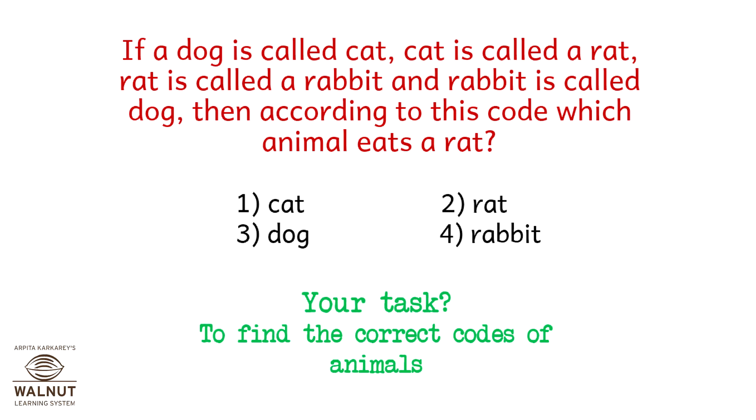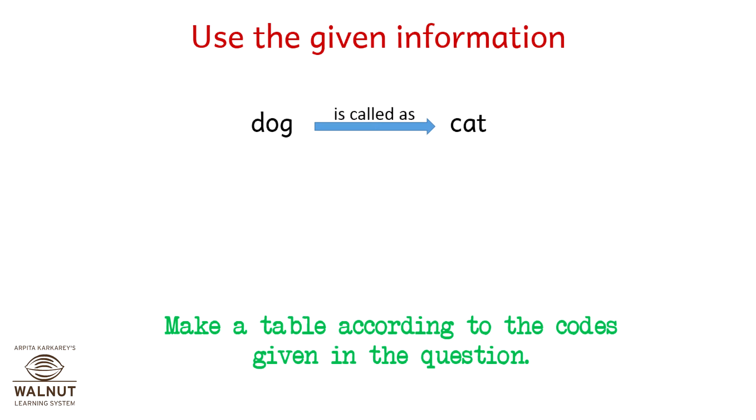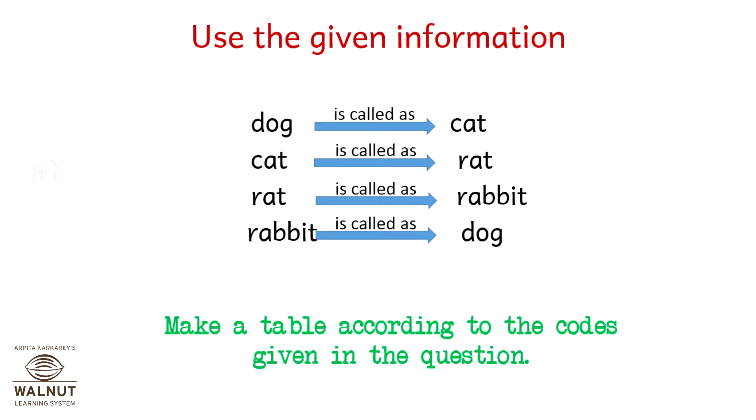To find the correct codes of animals. Let's use the given information. The dog is called as the cat, let's write it this way. The cat is called as the rat, the rat is called as the rabbit, the rabbit is called as the dog. Let's make a table according to the codes given in the question.